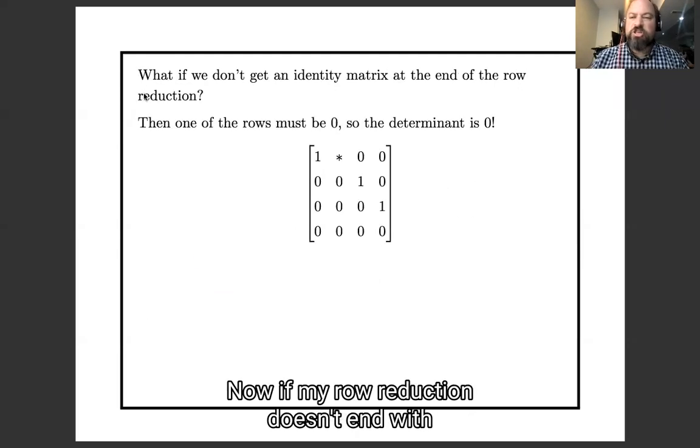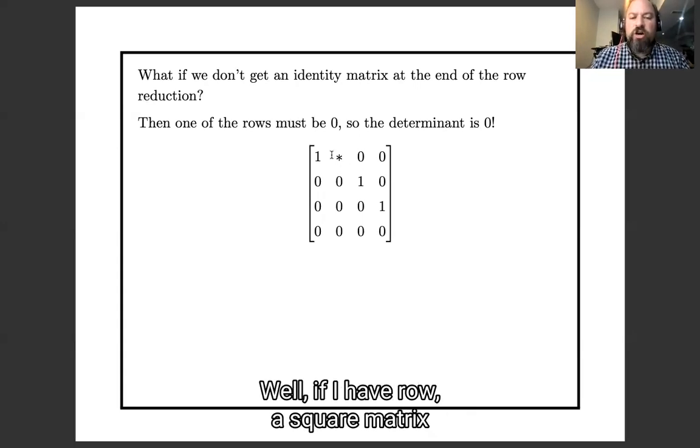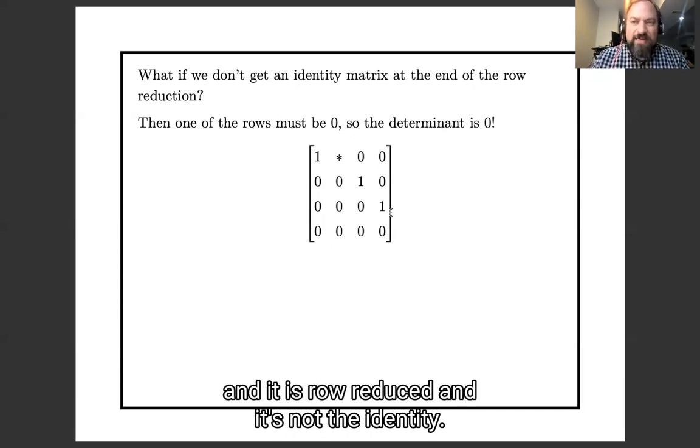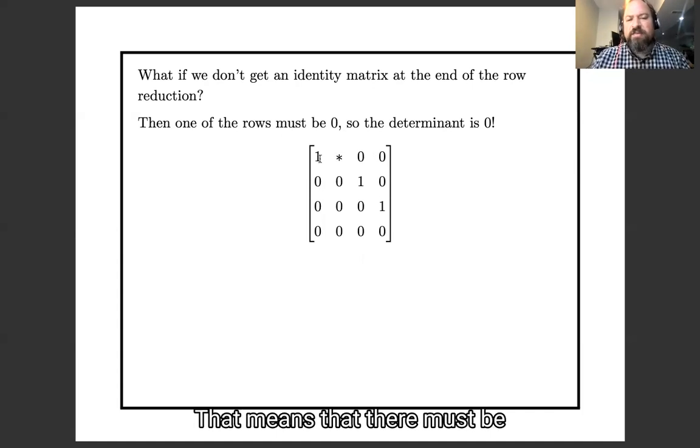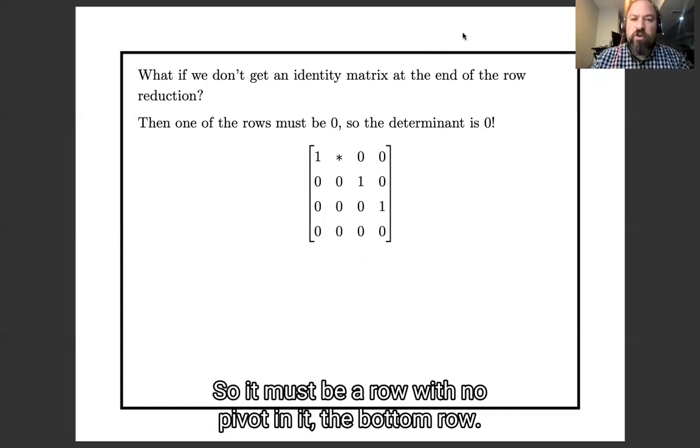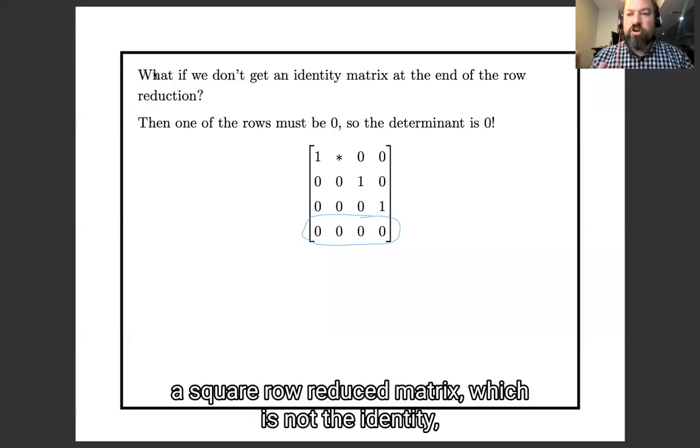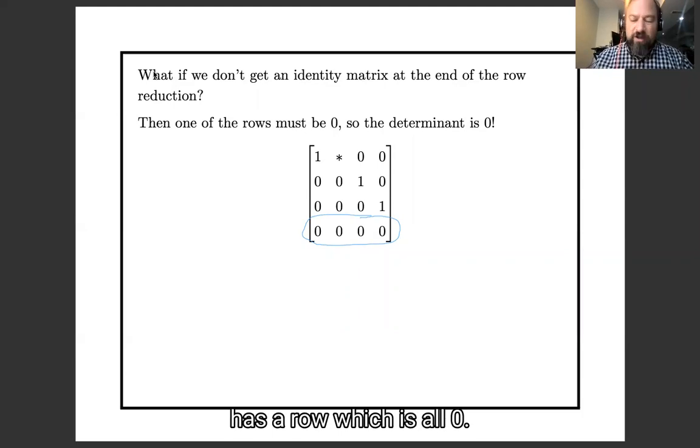Now, if my row reduction doesn't end with an identity matrix, what happens then? Well, if I have a square matrix, and it's row-reduced, and it's not the identity, that means that there must be fewer pivot columns than there are rows. So there must be a row with no pivot in it, the bottom row. That bottom row must be 0. So a row-reduced matrix, a square row-reduced matrix, which is not the identity, has a row which is all 0. And remember, whenever a row is all 0, the determinant is 0.